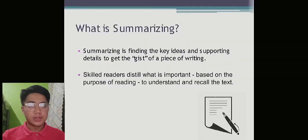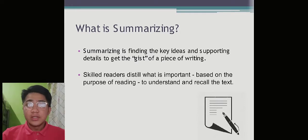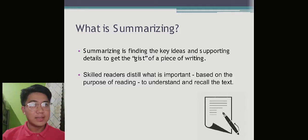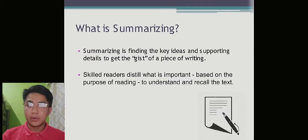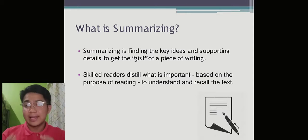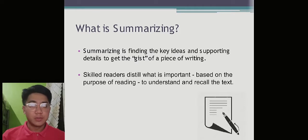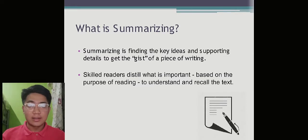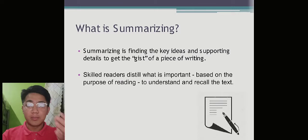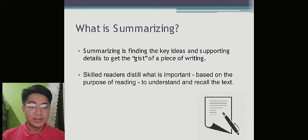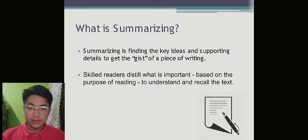For our first slide, we have the definition of summary. Summarizing is finding the key ideas and supporting details to get the gist of a piece of writing. The gist is referring to the substance or the essence of the text. Skilled readers distill what is important — distill means to purify, extracting the essence of the text. You only need the important part of the text in order to summarize it.